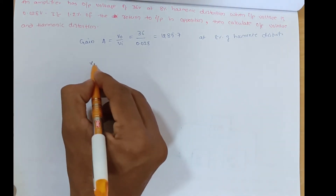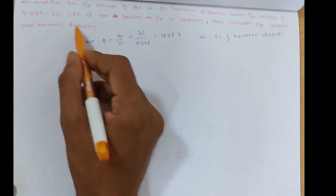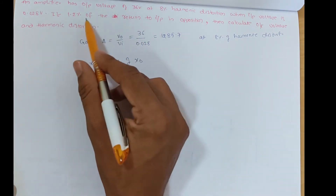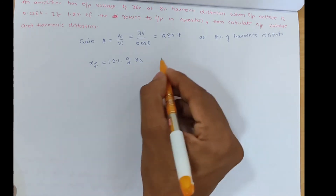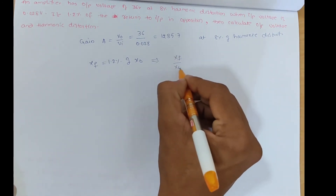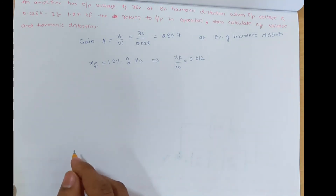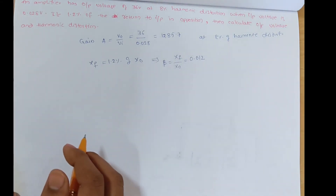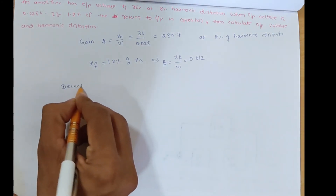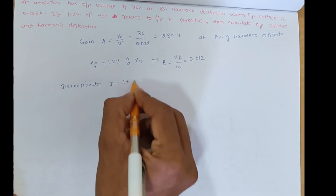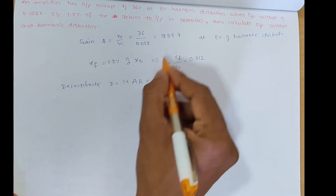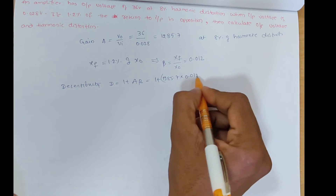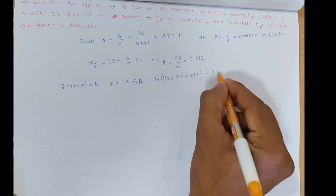The feedback signal XF is 1.2% of X0, so XF/X0 = 0.012, which is the beta value. Beta = 0.012. Desensitivity D = 1 + Aβ = 1 + 1285.7 × 0.012. Simplifying, D ≈ 16.4.